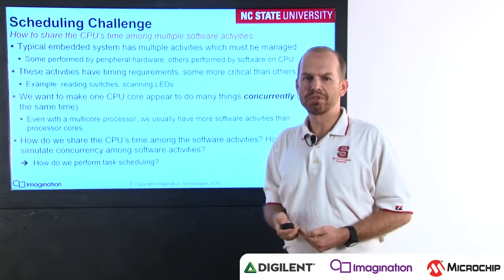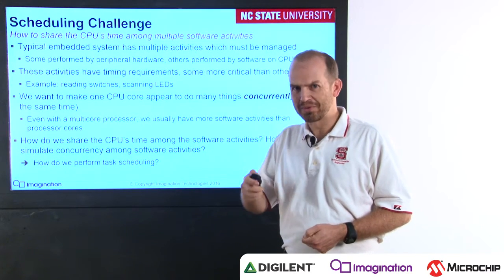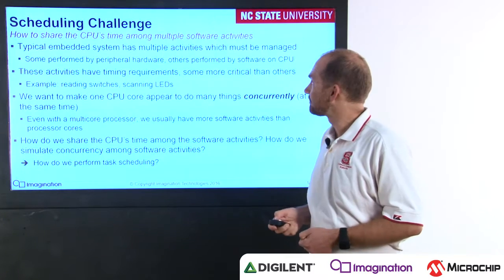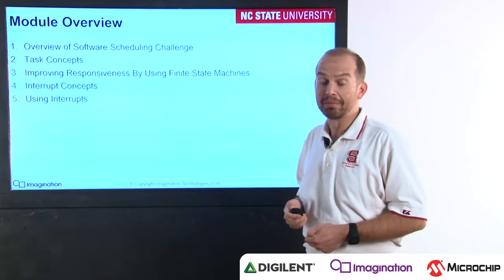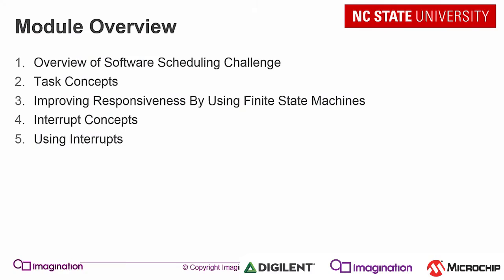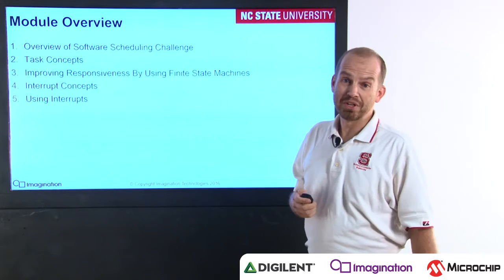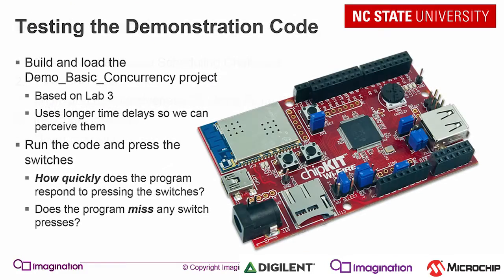We look at this throughout the course over several modules. Here we're looking at Module 4. In this module, we look at task concepts, how to improve responsiveness using finite state machines, and then we introduce interrupts. This module has several demonstrations. The first demonstration code is the demo basic concurrency project.